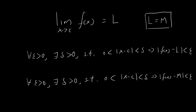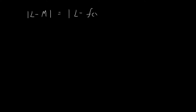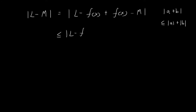In order to prove L is equal to M, one way to do this is to prove L minus M is equal to 0. L and M are two numbers that satisfy the epsilon-delta definition, and I want to prove that this term is equal to 0. I can do this by first subtracting f of x and then adding f of x to this term. Then I invoke the triangle inequality, which states that the absolute value of A plus B is smaller than or equal to the absolute value of A plus the absolute value of B.